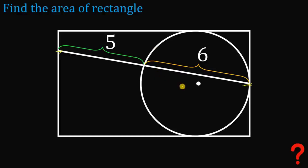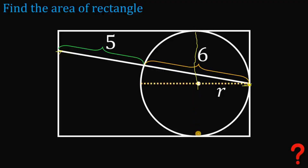One strategy to answer this kind of question is to focus on the point of tangency — either connect it to the center of the circle to create a radius, or create a diameter. Let's call the radius of the circle R. This diameter is also the height of this rectangle, so the height equals R plus R, or simply 2R.